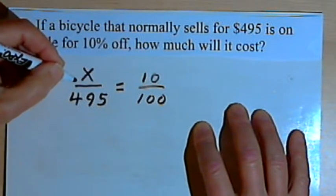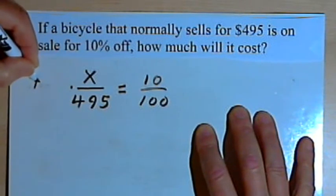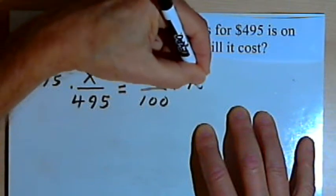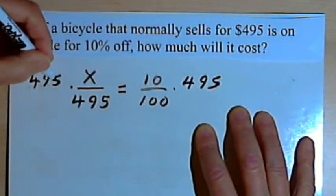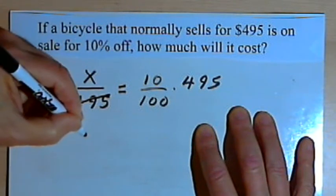Now I want to solve for x, which means I want to get the x all by itself. I'll multiply both sides by 495, and 495 on the left side will cancel out, and I just have x.